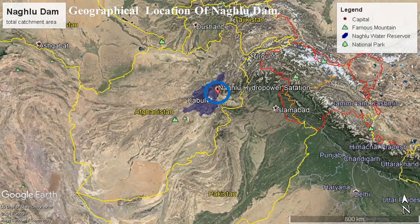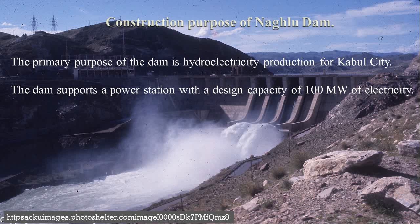Here the location of the dam and catchment areas are shown in the photo. The construction purpose at the beginning was planned to produce electricity for Kabul city only. However, later the electricity was also transferred to Jalalabad city. The dam produces 100,000 megawatts of electricity.